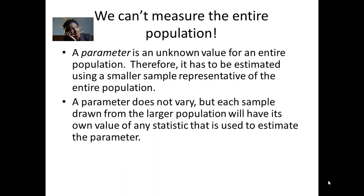This unknown parameter — the mean of every person's IQ living in the United States — doesn't vary. It is a concrete number. But every sample that we draw from this larger unknown population will have its own value of any statistic used to estimate that parameter.